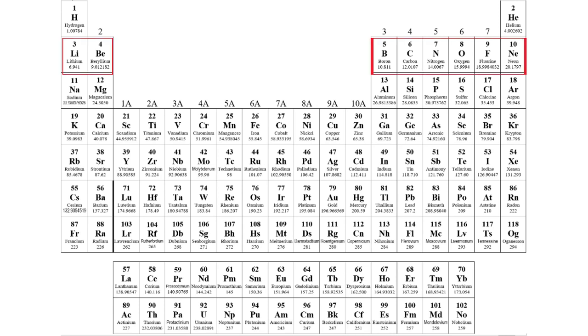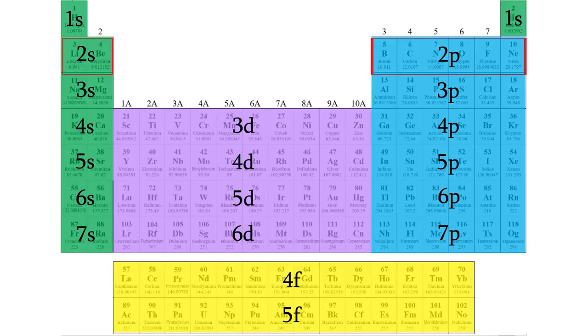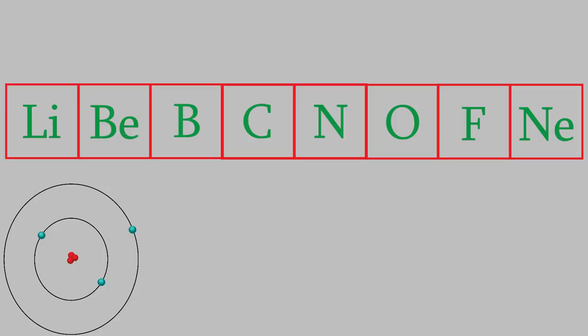Take the second row of the periodic table, for example. Each of these atoms has its valence electrons in the n equals 2 shell. Lithium has 3 protons in all, so its nucleus has a charge of plus 3. However, as we found out in the last video, the two inner electrons shield some of this charge so that the valence electron only feels an effective nuclear charge of plus 1.